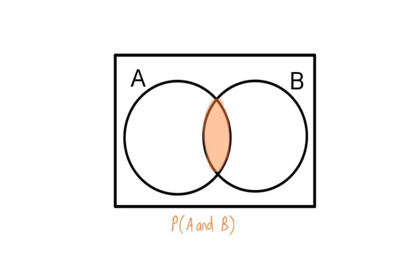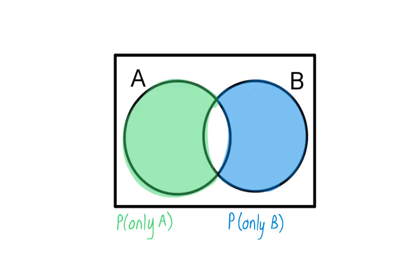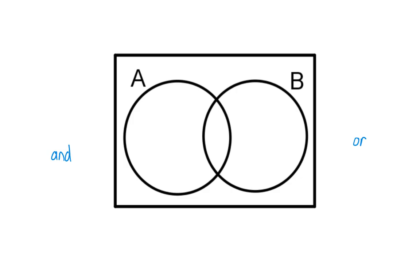And when we then exclude this intersection, we have only A and only B. Then I will also remind you about the difference between AND, which is intersection, and OR, which is union.